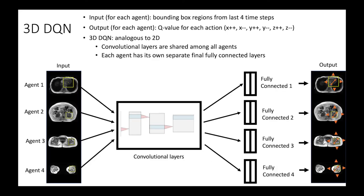Here is the diagram for the deep Q-network of the 3D multi-agent model. It's analogous to the 2D deep Q-network, except now there are four agents. The four agents all share the same convolutional layers, but they have their own separate fully connected layers at the end of the network. The output for each agent is six Q-values for the six possible actions in the 3D environment.